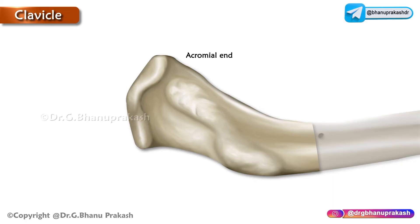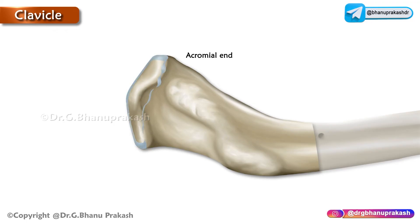The acromial end is flat and has an oval facet which articulates with the clavicular facet on the acromion process of the scapula. The margins give attachment to the capsular ligament of the acromioclavicular joint.